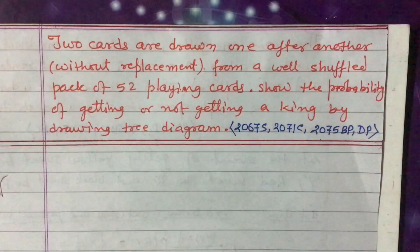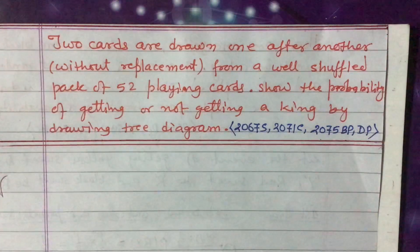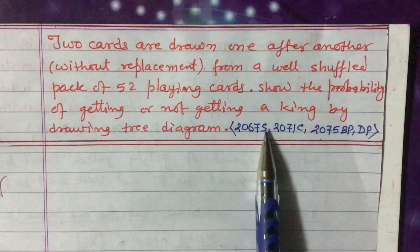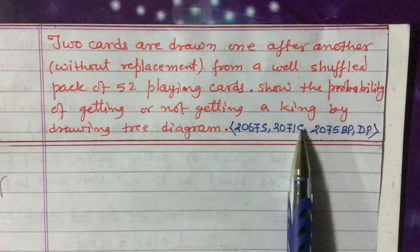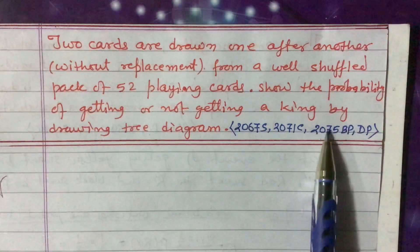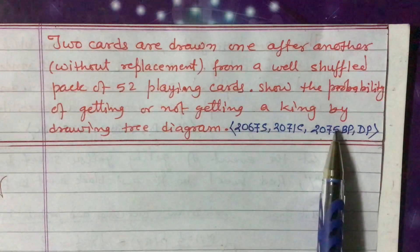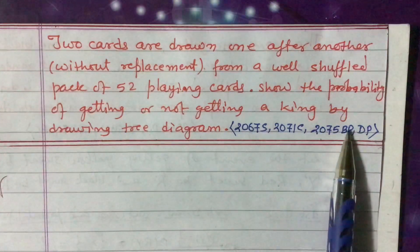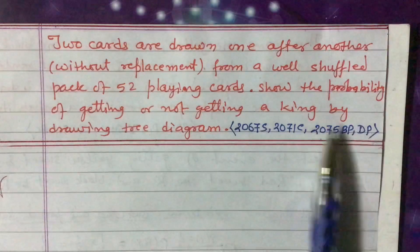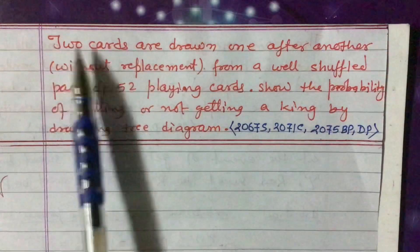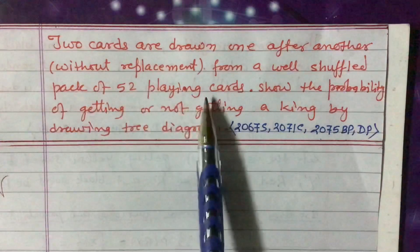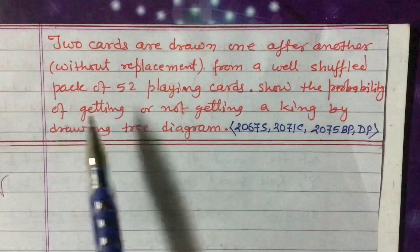Dear students, today I'm going to teach you one question related to probability tree diagrams. This question was asked in 2067 for the supplementary examination of the SLC examination, in 2071 for the western development region, and in 2075 in two provisions — provision number two and provision number four. The question is: two cards are drawn one after another without replacement from a well-shuffled pack of 52 playing cards.